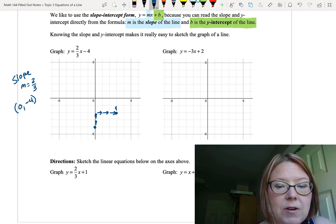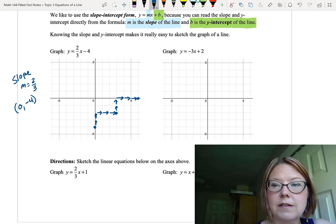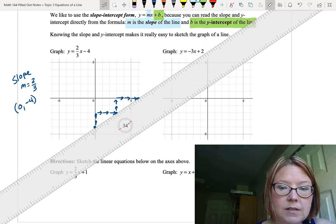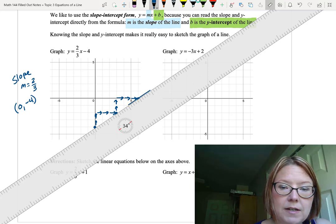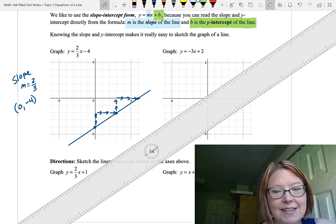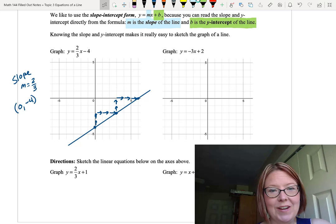Then we can just repeat that, rise 2, run 3. We'll pull out our ruler and draw that line. What we can see is we have an increasing line that has a y-intercept of negative 4 and a slope of 2 thirds. Cool, huh?